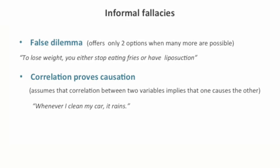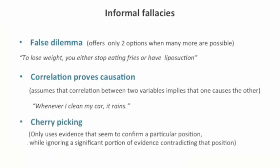Another very common fallacy is the cherry-picking fallacy, when an argument uses supporting evidence selectively and contradicting evidence is simply ignored. For instance, claiming that climate change has stabilized by only looking at certain periods where little change has taken place, rather than the longer-term trends.